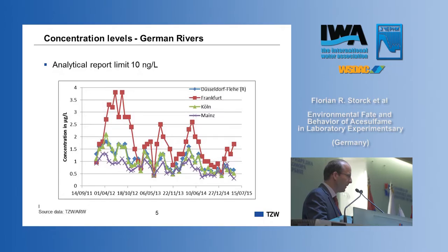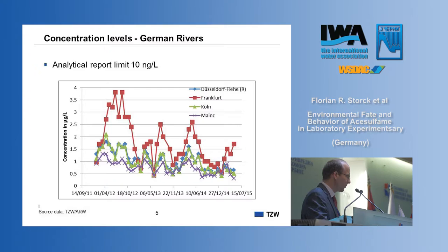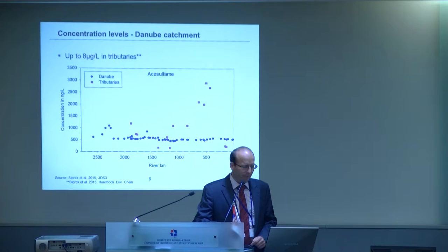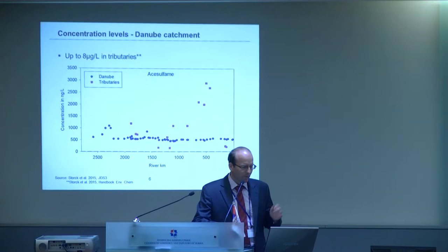So what do we find when we take a look at rivers? That's some examples from the Rhine river at different sites within Germany. The red curve is not the Rhine — that's a tributary of the Rhine, the river Main near Frankfurt. Here we can see concentrations ranging from approximately half a microgram per liter to four micrograms per liter. That is quite a lot for a trace compound or micropollutant. And if we take a look at the Danube catchment — this is from the Joint Danube Survey 3 — that's the profile along the Danube, starting on the left side in Germany and ending on the right side in the Black Sea. In the Danube main river, concentrations were between half a microgram per liter and up to approximately one microgram per liter.